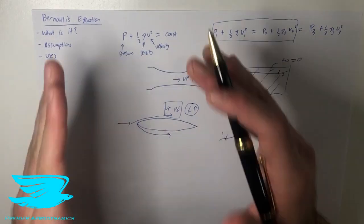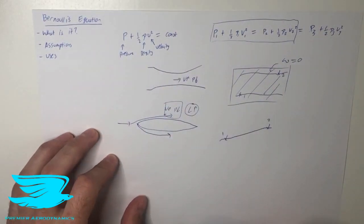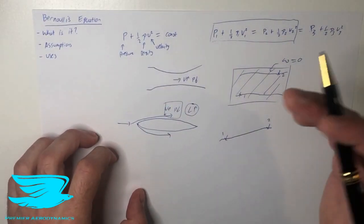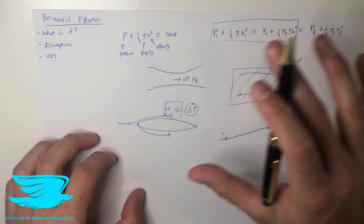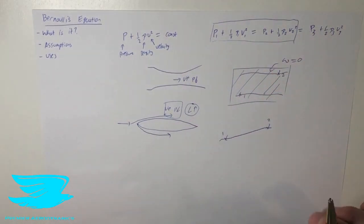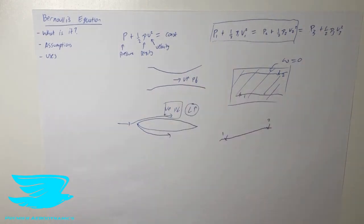The only reason the pressure drops because the velocity increases is because of Bernoulli's equation. If Bernoulli's equation didn't exist, this would not work. Also, if viscosity didn't exist this also wouldn't work, but that's a different point — let's not open that can of worms here. Let's just stick to Bernoulli's equation.